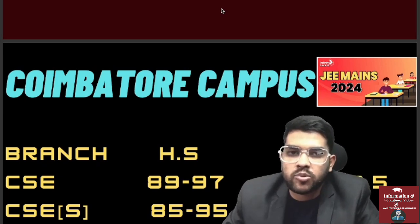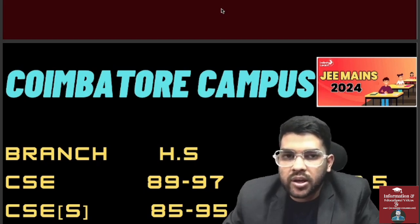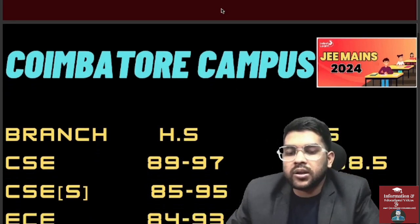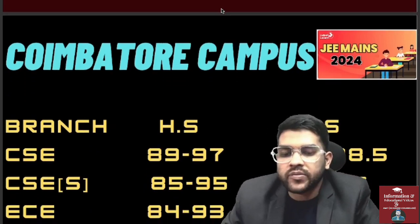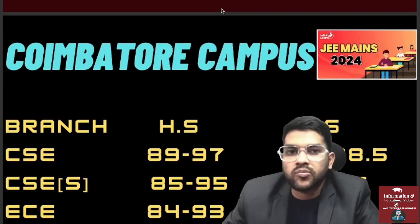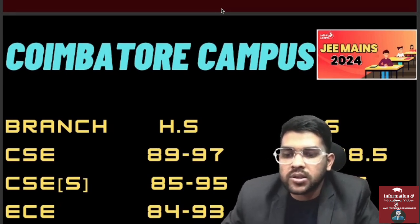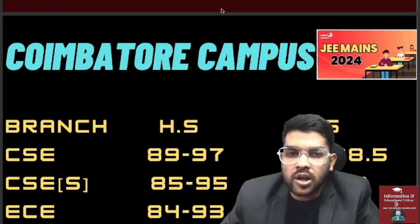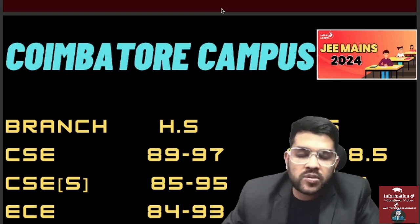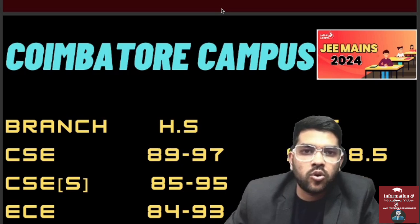Slab 1 has 10% seats, slab 2 has 20% seats, slab 3 has 20% seats again, and slab 4 has 50% seats. For other state, 92 to 98.5 percentile is required. Home state and other state quota is there — they will not mention it on the website. If you are from home state you can get the college at 97 with slab 1, but other state students will not get slab 1, as 50% seats are reserved for home state students.